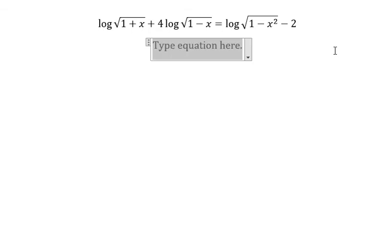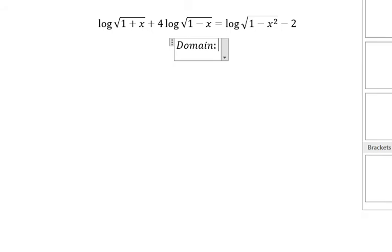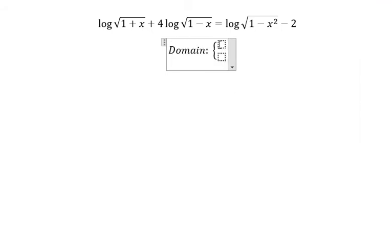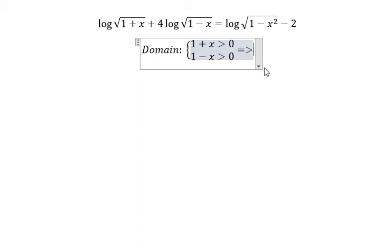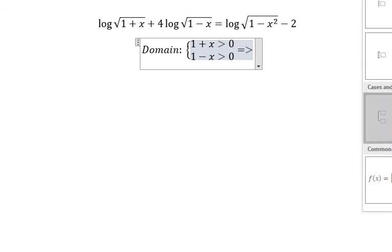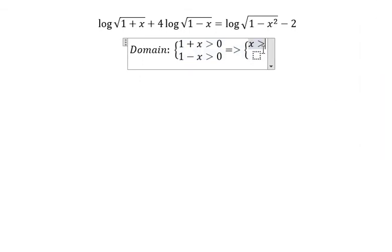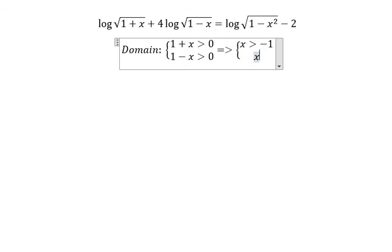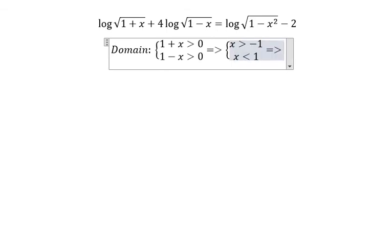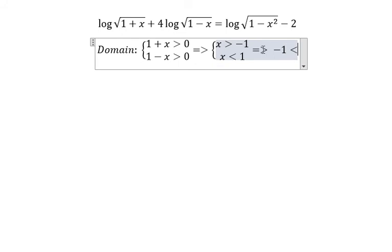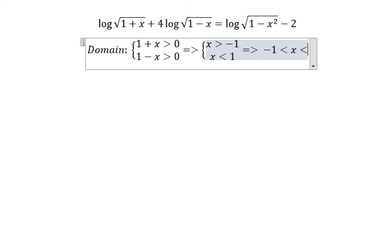First, we need to find the domain. So we will have 1 plus x is greater than 0, and 1 minus x is greater than 0. So we will get x is greater than negative 1 and x is smaller than 1. So we will get negative 1 is smaller than x and x is smaller than 1.